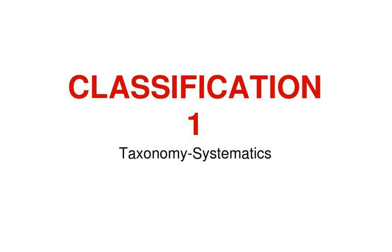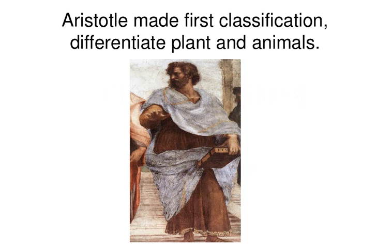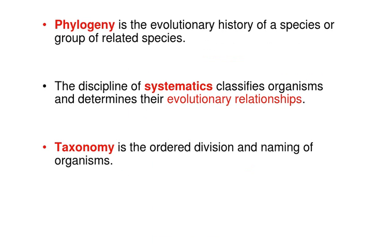Hello students, this is our new unit: Classification. We are going to classify organisms according to their common characteristics into three domains and six kingdoms. This branch of science is called taxonomy or systematics. Aristotle first started classification, differentiating plants and animals. Phylogeny is the evolutionary history of a species or group of related species. Systematics classifies organisms and determines their evolutionary relationships.